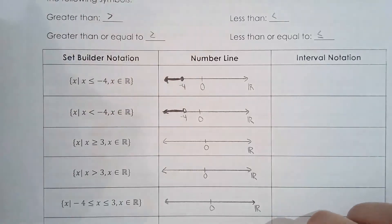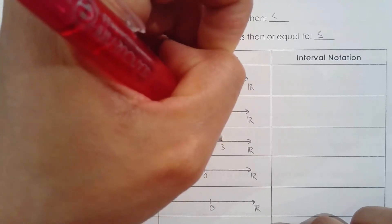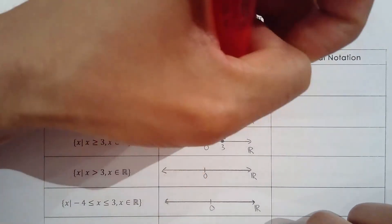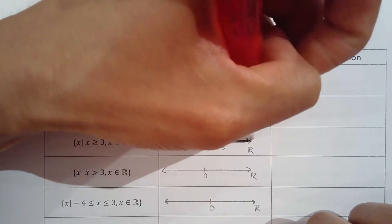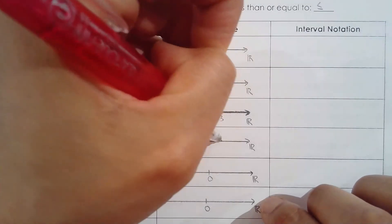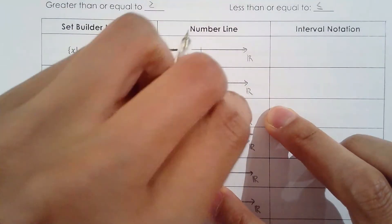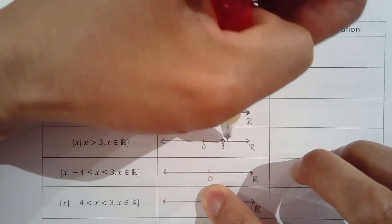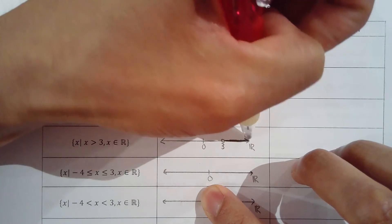x is greater than or equal to 3 — so at 3 we use a closed circle and highlight anything greater than that. If it's just greater than 3, we use an open circle at 3 and then highlight anything greater than 3.